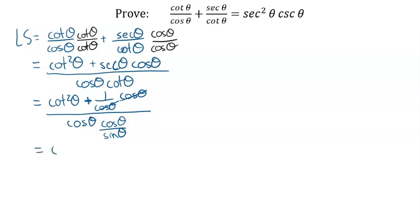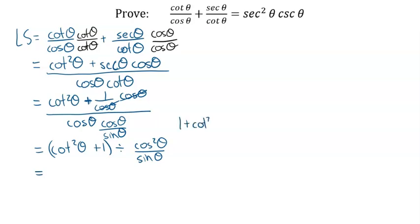I'm holding on to cotangent squared theta plus one because when we see something squared it might be a Pythagorean identity. The denominator becomes cosine squared theta over sine theta — cosine times the cotangent which is cosine over sine. Since this is a compound fraction, I'm going to invert and multiply. I recognize that one plus cotangent squared theta equals cosecant squared theta, so I replace the numerator with cosecant squared theta and multiply by the reciprocal, sine theta over cosine squared theta.